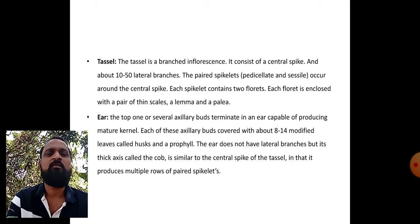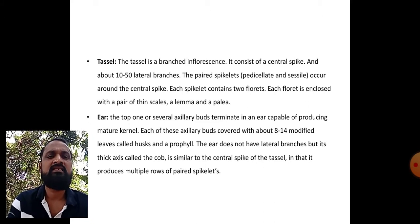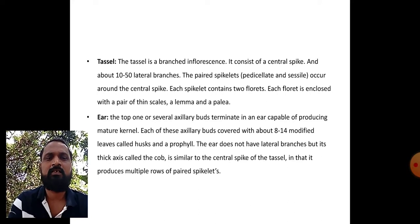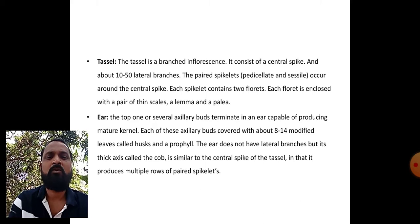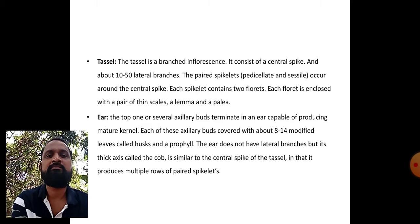The ear: one of several axillary buds terminates in an ear capable of producing mature kernels. Each of these axillary buds is covered with about 8 to 14 modified leaves called husk. The ear does not have lateral branches, but its thick axis called the cob is similar to the central spike of the tassel in that it produces multiple rows of paired spikelets.